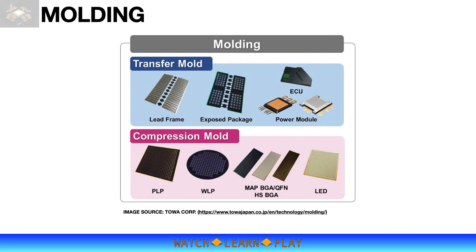Transfer molding is also used for small outline package types such as SOIC, SSOP, TSSOP, as well as quad flat package (QFP) and the leadless QFN package. Transfer molding is not limited to lead frame based packages — it is also widely used in BGA packages, particularly wire bonded BGA. Compression molding is popular for advanced packaging such as panel level package (PLP) and wafer level package (WLP), whose complexity makes them more sensitive to warpage and damage due to mold material flow.